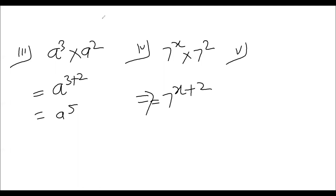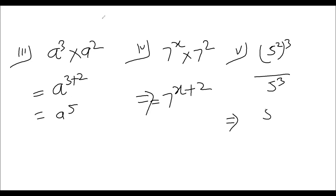Question 5: 5 to the power 2 to the power 3, upon 5 to the power 3. We will solve the numerator first — we have multiplication of powers, so 5 to the power 2 into 3 gives 5 to the power 6. Now we have 5 to power 6 divided by 5 to power 3. The base is the same and the powers are different, so we subtract the powers: 5 to power 6 minus 3, and our answer is 5 to power 3.